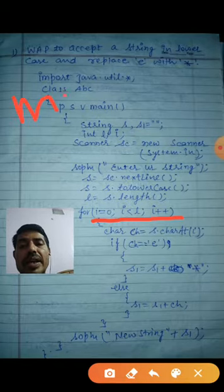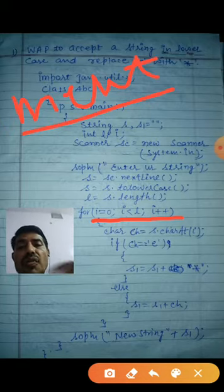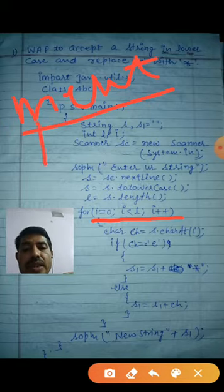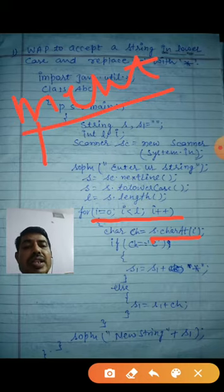Suppose m-e-n-t, mint is written here. Now first of all you will extract m. How will you extract? You write down here s dot charAt i. I is what? 0. You know this one, i is 0. The charAt 0 will go in ch. What is in ch you know? M.